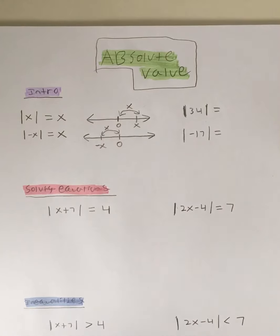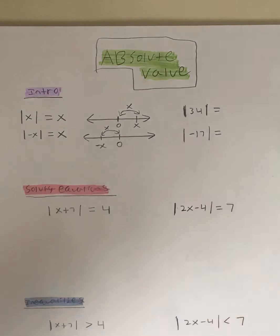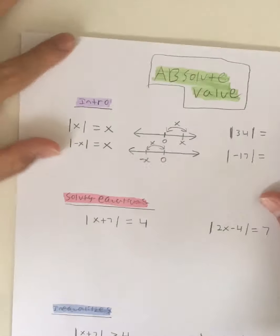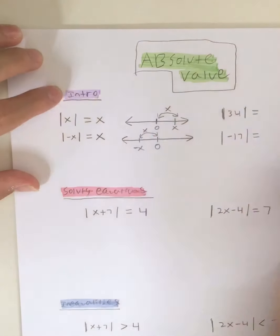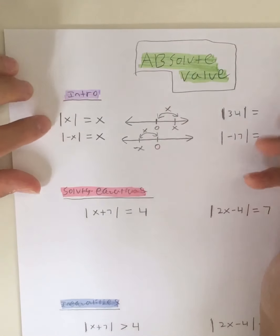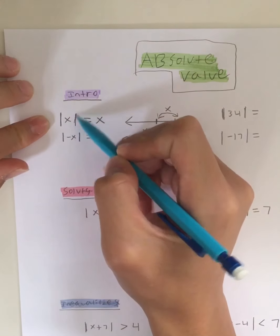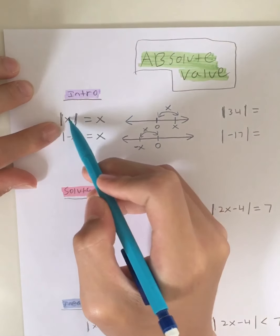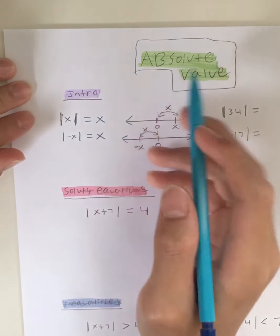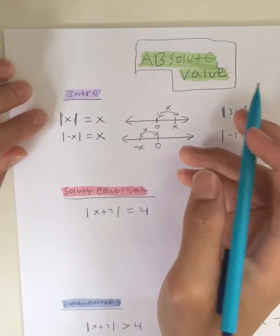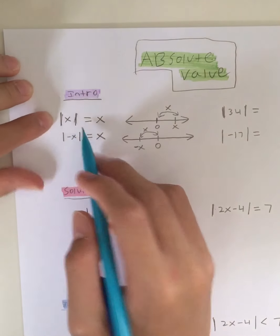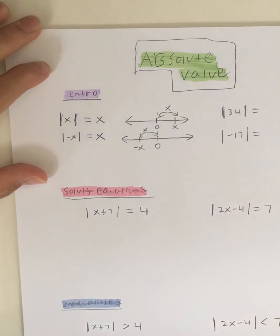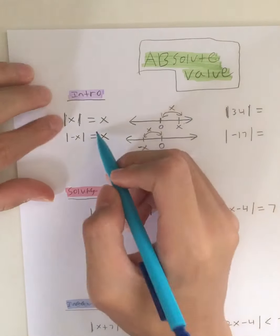This is the intro to absolute value — if you understand this already you can move on to solving equations. So what are absolute values? You see this symbol right here — these two lines that look like 11 — and you have a number in between these two lines. What does this represent?